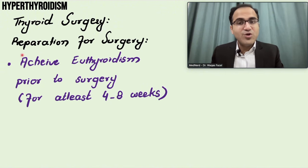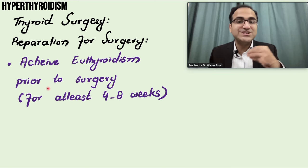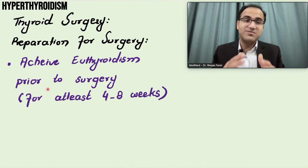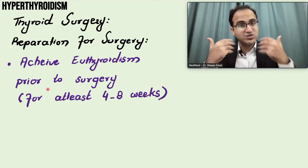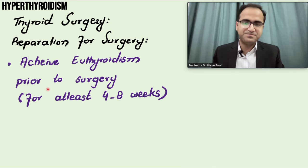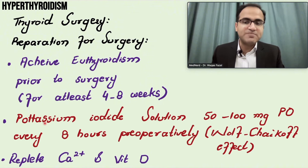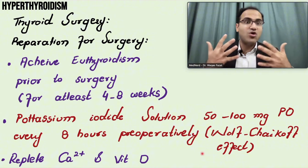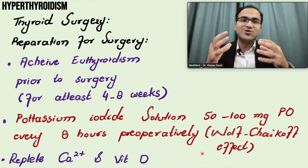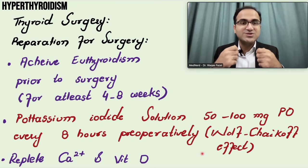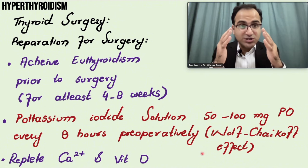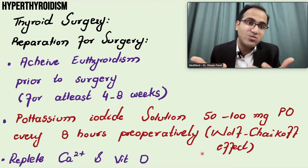Before surgery, achieve euthyroidism by giving medications to normalize thyroid function tests - this is done for at least four to eight weeks. If you perform surgery before normalizing TFTs, the patient risks thyroid storm during the procedure. Potassium iodide solution 50 to 100 mg orally every 8 hours is given pre-operatively to induce the Wolff-Chaikoff effect, blocking iodine uptake by the thyroid gland so it cannot produce thyroid hormones during surgery.